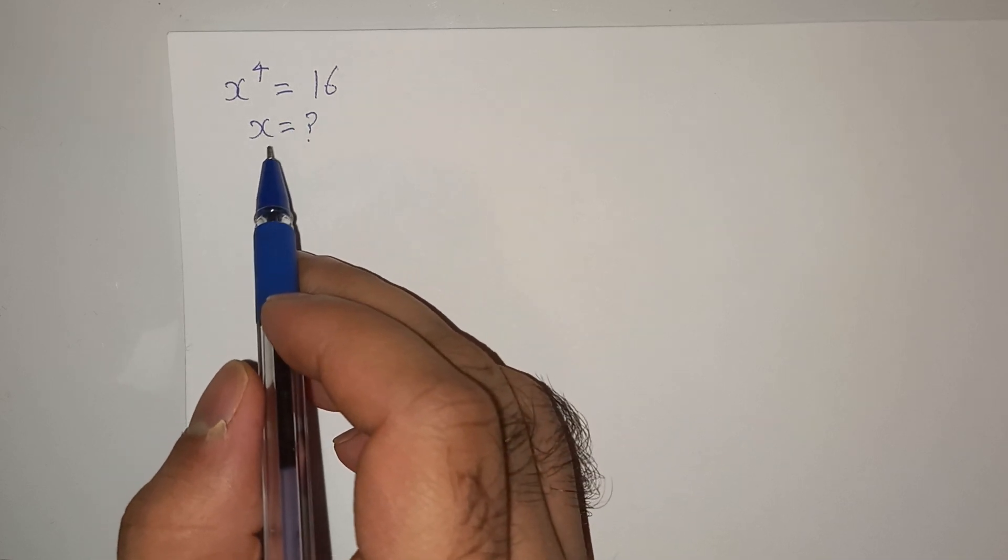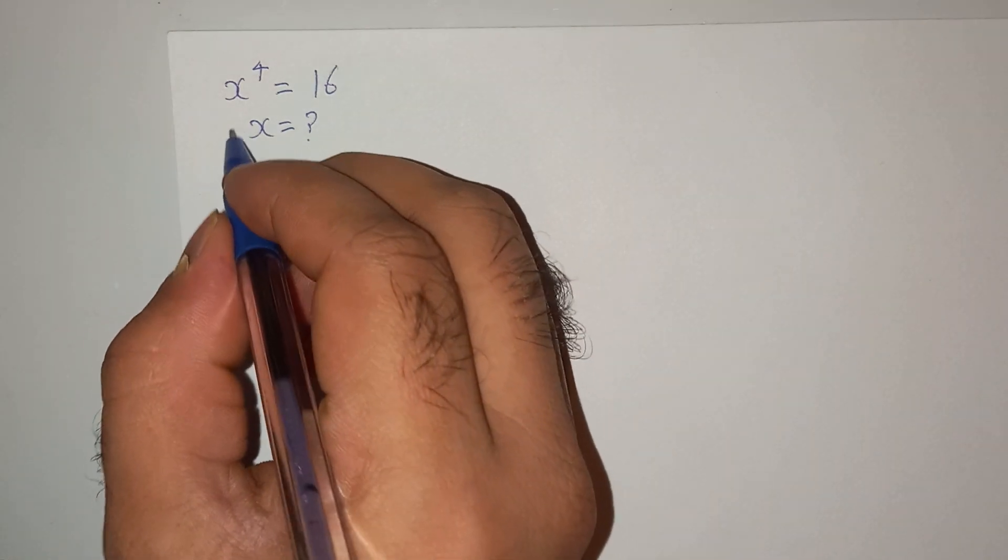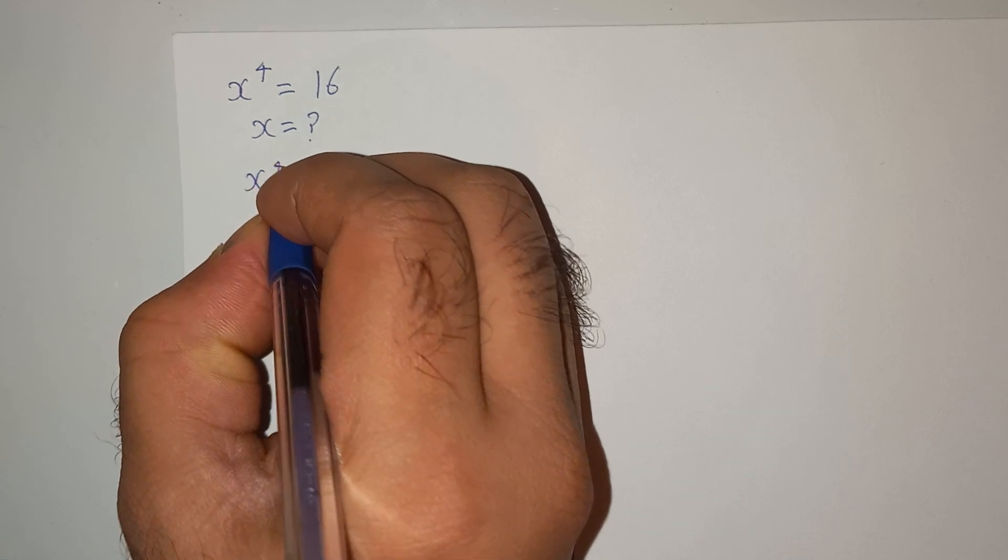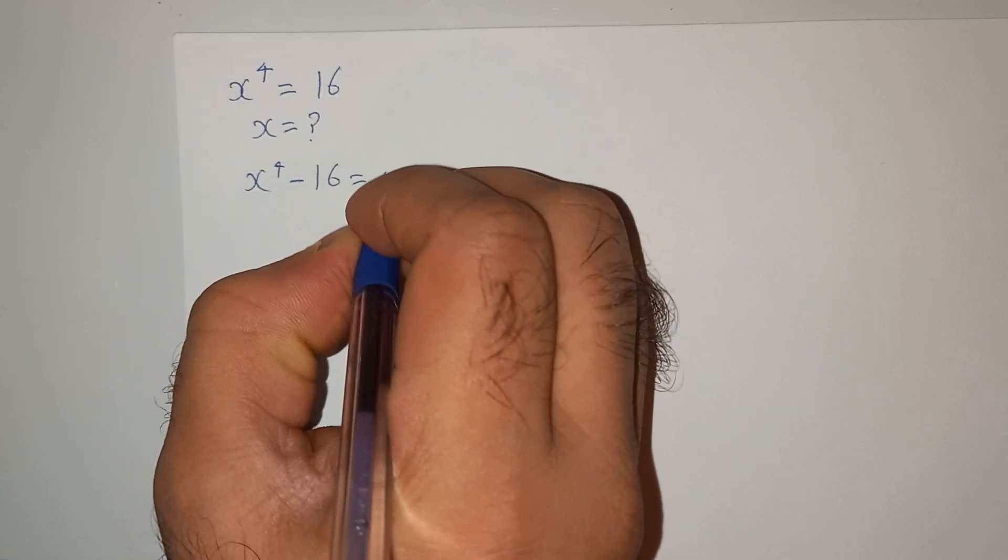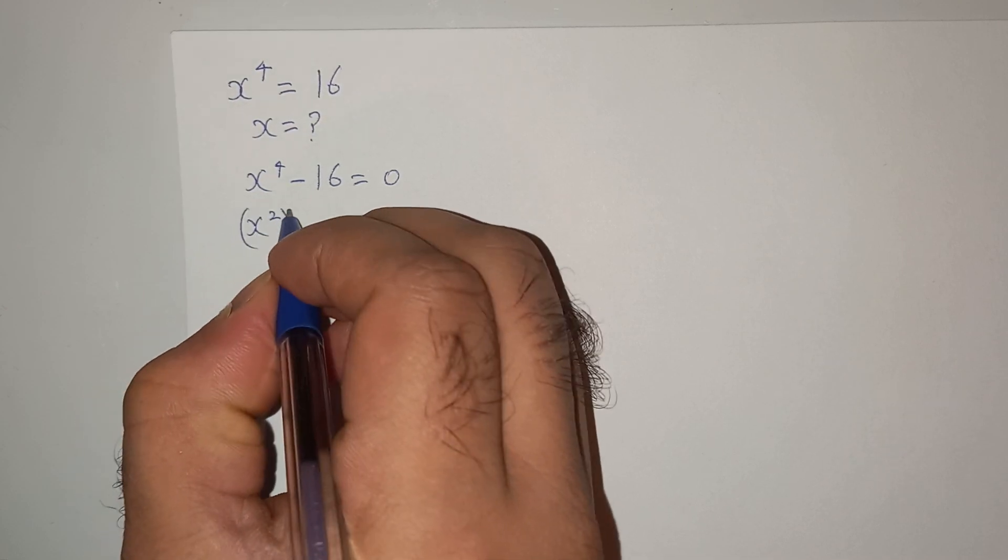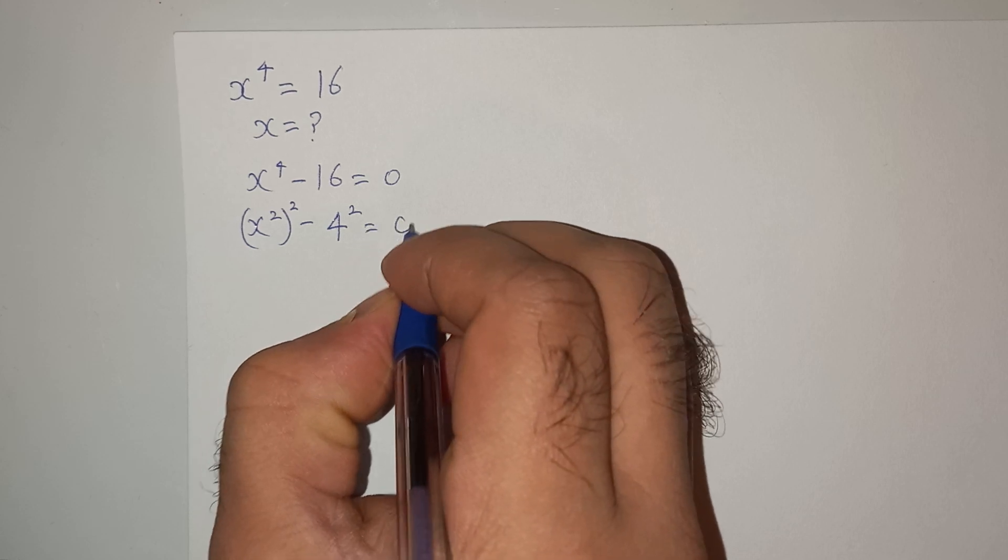Let's try to solve this equation. We can write this as x power 4 minus 16 equals 0. Now we can write this as x square whole square minus 4 square equals 0.